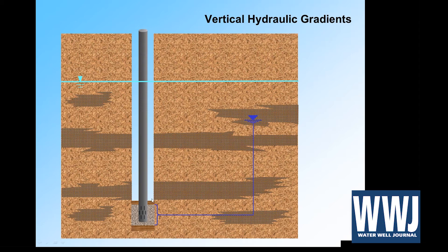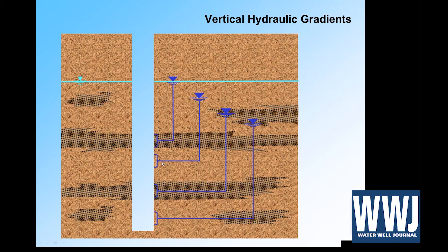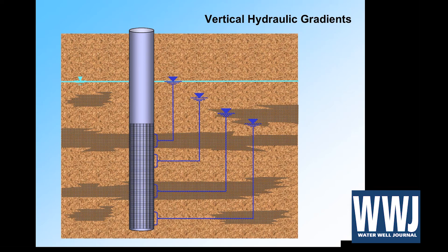When we measure water levels in open boreholes during depth-specific sampling, we commonly see different water levels at different depths. This happens frequently in agricultural areas because water is pumped for farms, put on crops, and some recharge comes back — so we're adding water to the top of the aquifer while removing it from the bottom, creating these vertical hydraulic gradients. They can be downward or upward. Out in the aquifer, these pressure zones won't co-mingle because of anisotropy and stratigraphy holding them apart. But if we put a well in, now we've connected the dots — water will flow from high pressure to low pressure.